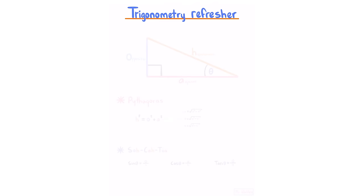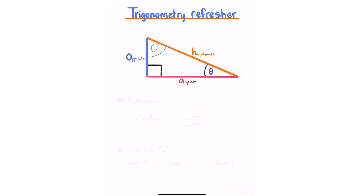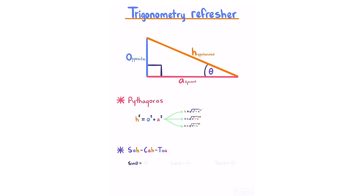Trigonometry refresher. Every triangle in this course will be a right angle triangle. The longest side is the hypotenuse. The other two sides are adjacent and opposite, depending on where the angle is defined. Pythagoras gives us: hypotenuse squared equals opposite squared plus adjacent squared. SOH-CAH-TOA: sine of angle equals opposite over hypotenuse, cosine equals adjacent over hypotenuse, and tan equals opposite over adjacent.